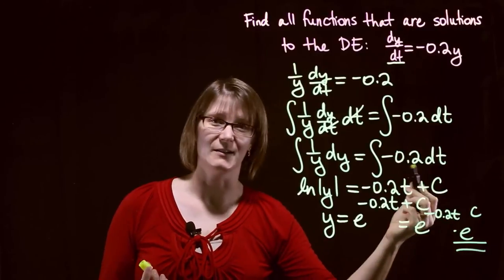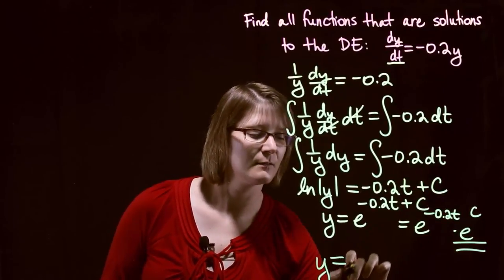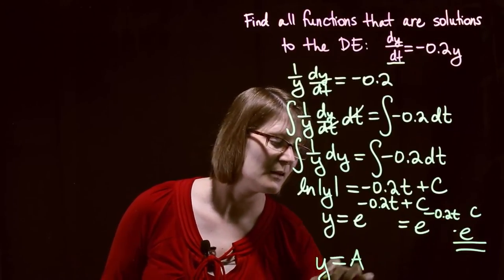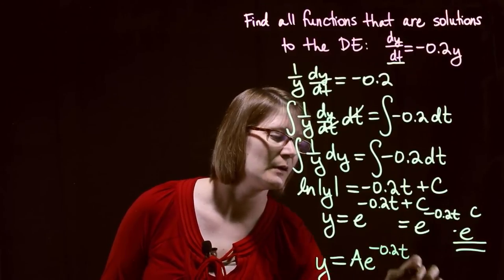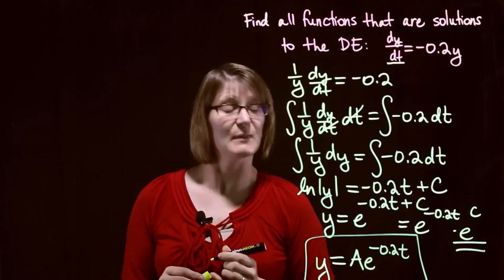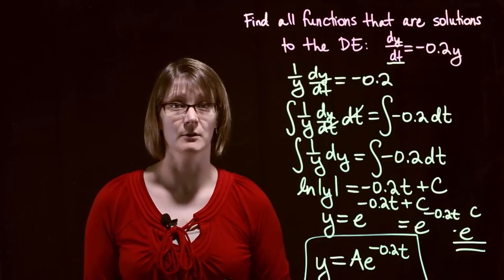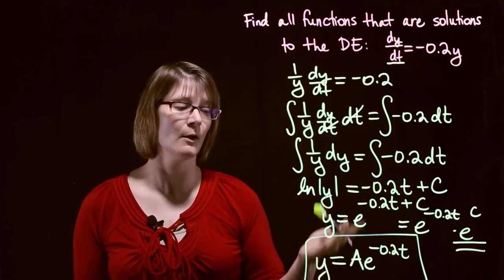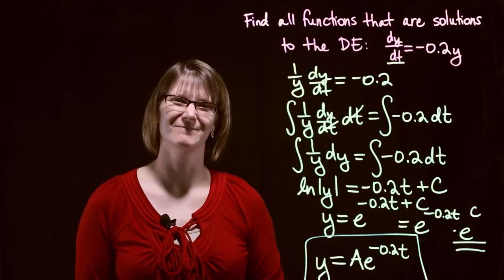But e to the c, we can just call that another constant. So our final answer here is going to give us, you want to call that constant a, another c, it doesn't really matter. So I'll just call it ae to the negative 0.2t. And that is my solution, my family of solutions to this differential equation. If I had an initial condition, I could actually solve for my value of a. But for now, we did exactly what the problem asked for. Thank you very much for watching.